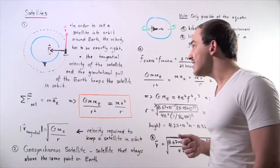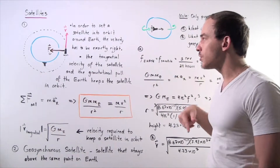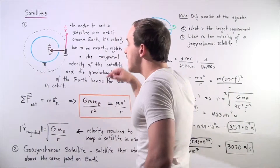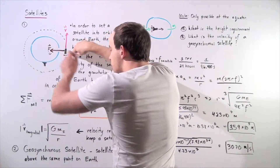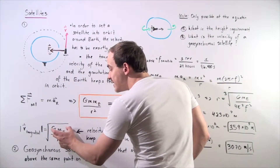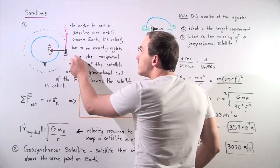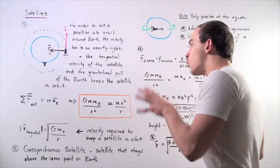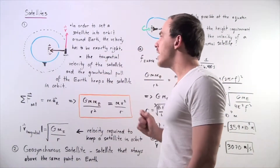This formula gives us the velocity required to keep the satellite in orbit around the Earth, given the distance between our satellite and the center of the Earth. Since G is a constant and M is a constant, if we know R we can find the velocity requirement to keep our satellite in orbit.